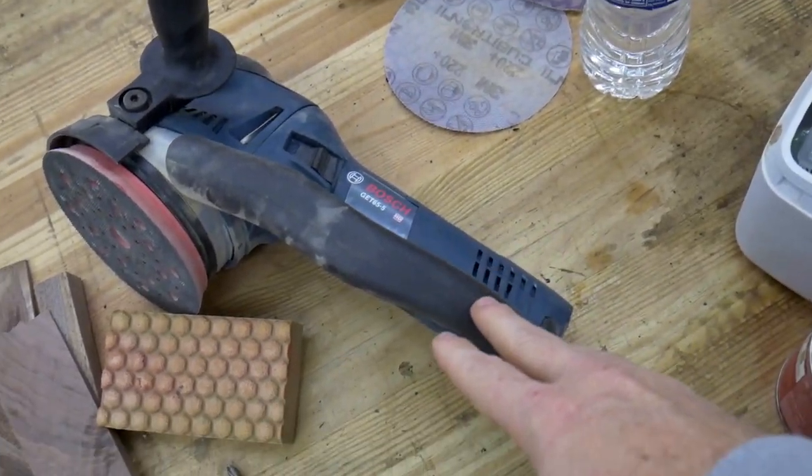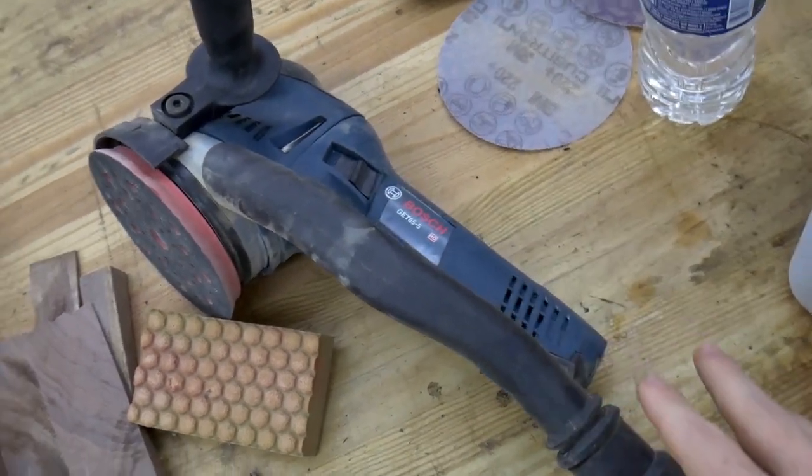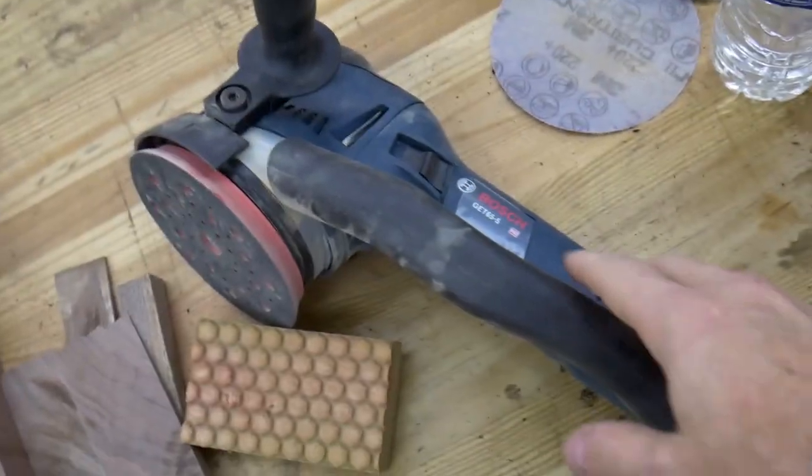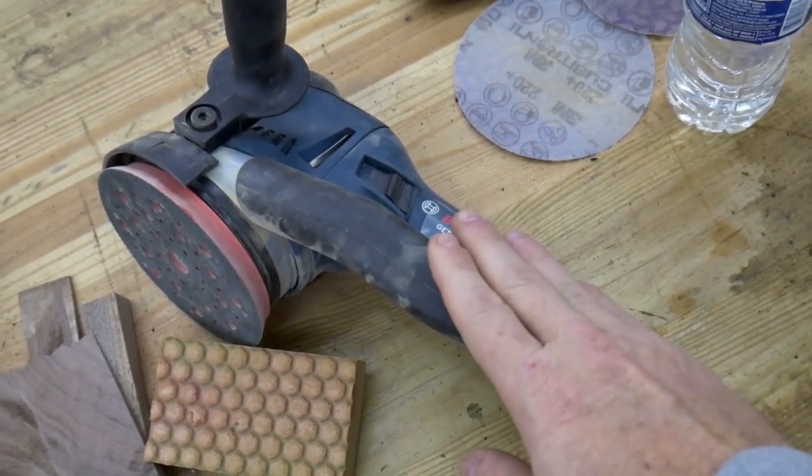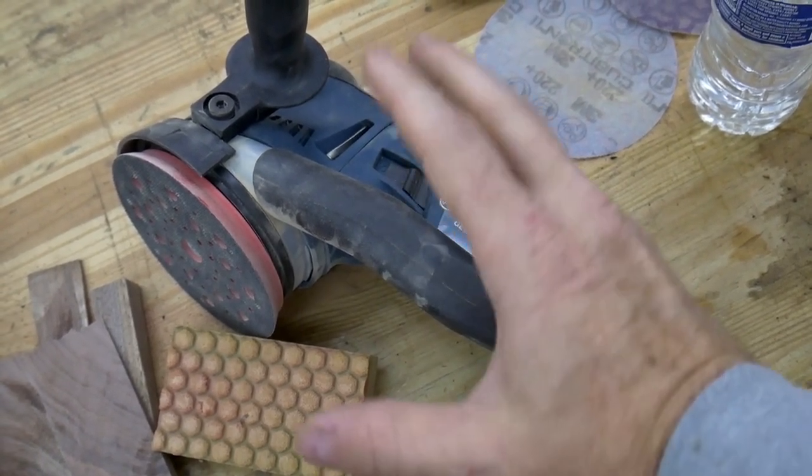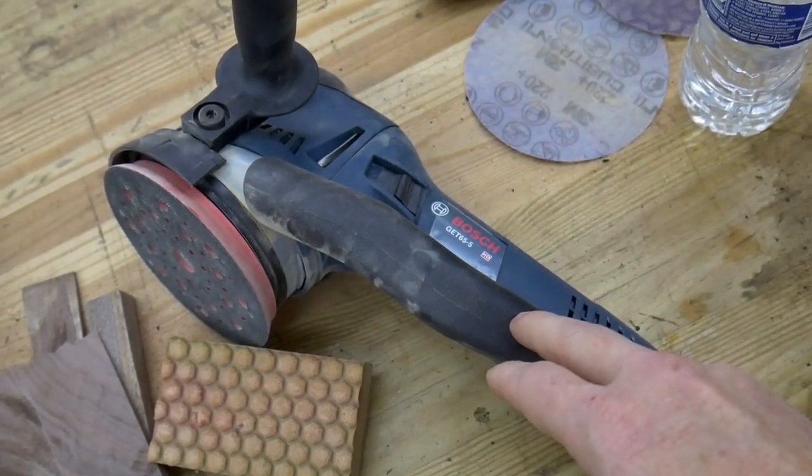A couple months ago my wife bought me for my birthday this awesome Bosch 5-inch random orbit sander. This thing is definitely a huge step up from the DeWalt little handheld palm sander I was using previously.